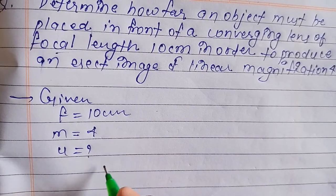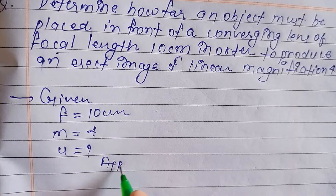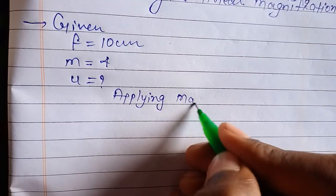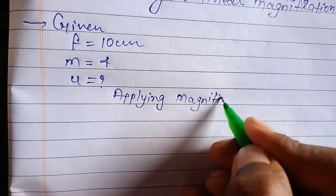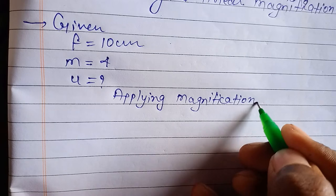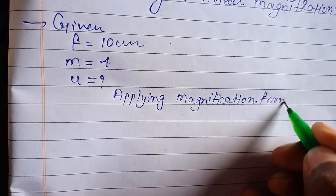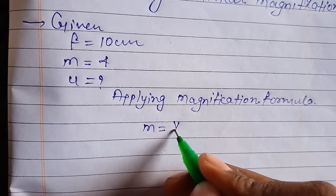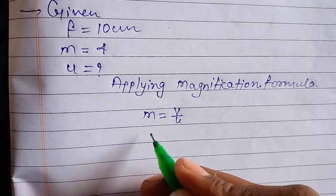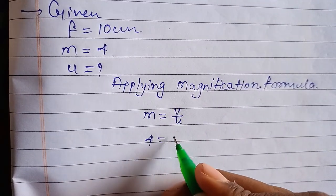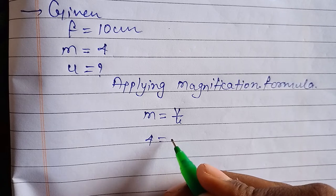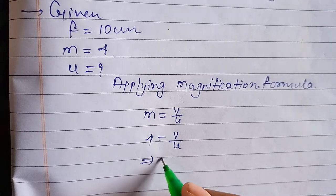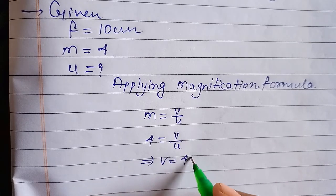Applying magnification formula, m equal to v by u. So m is given 4, v by u, so we can write this v equal to 4u.